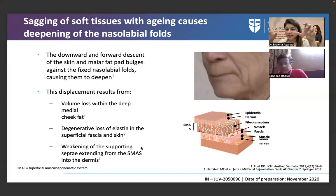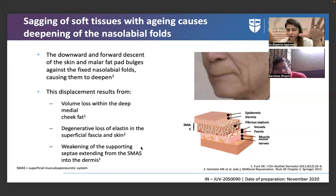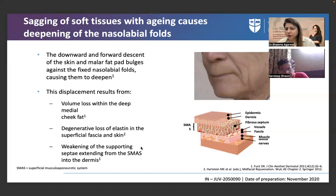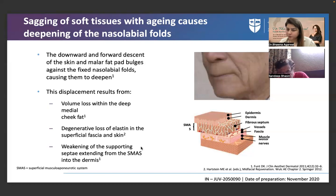You have to identify your client type. Category one: educated, scientifically driven individuals who collect a lot of knowledge. Category two: 'Doctor, do whatever you want — I'm fine with it.' Category three: 'We won't do injectables, but we're okay with home application or machines.' Understanding these categories helps tailor your approach.